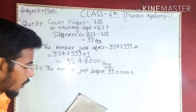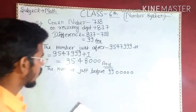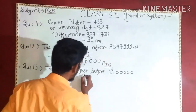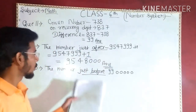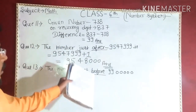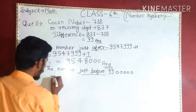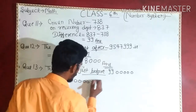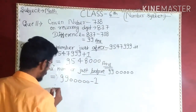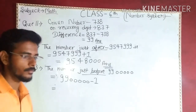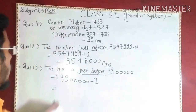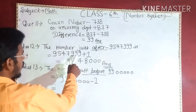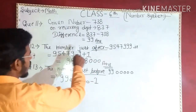The question is asking what comes just before this number. The number just before means subtract 1, and the number just after means add 1. In this question we have to subtract 1 from this value, and in this question we have to add 1 to this value, because this question asks for the number just after.